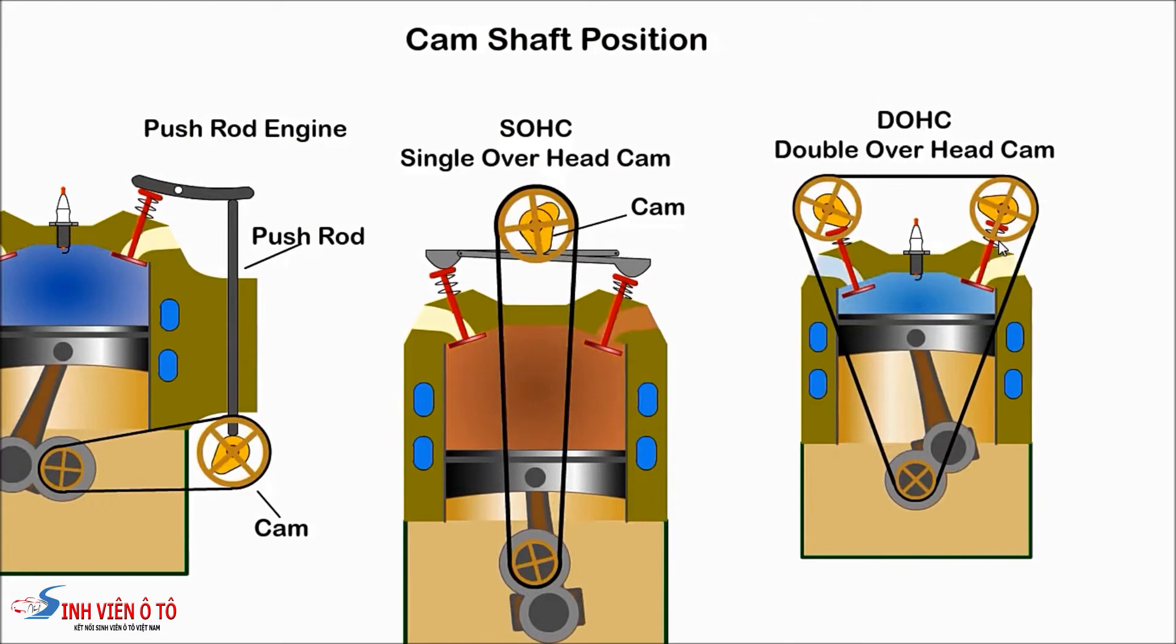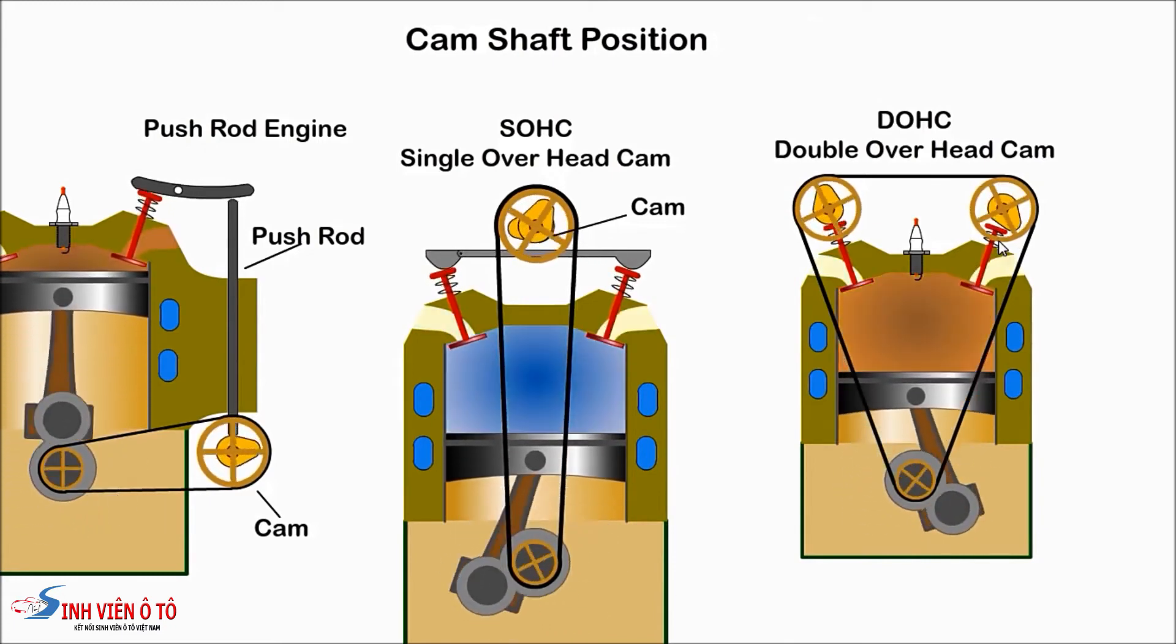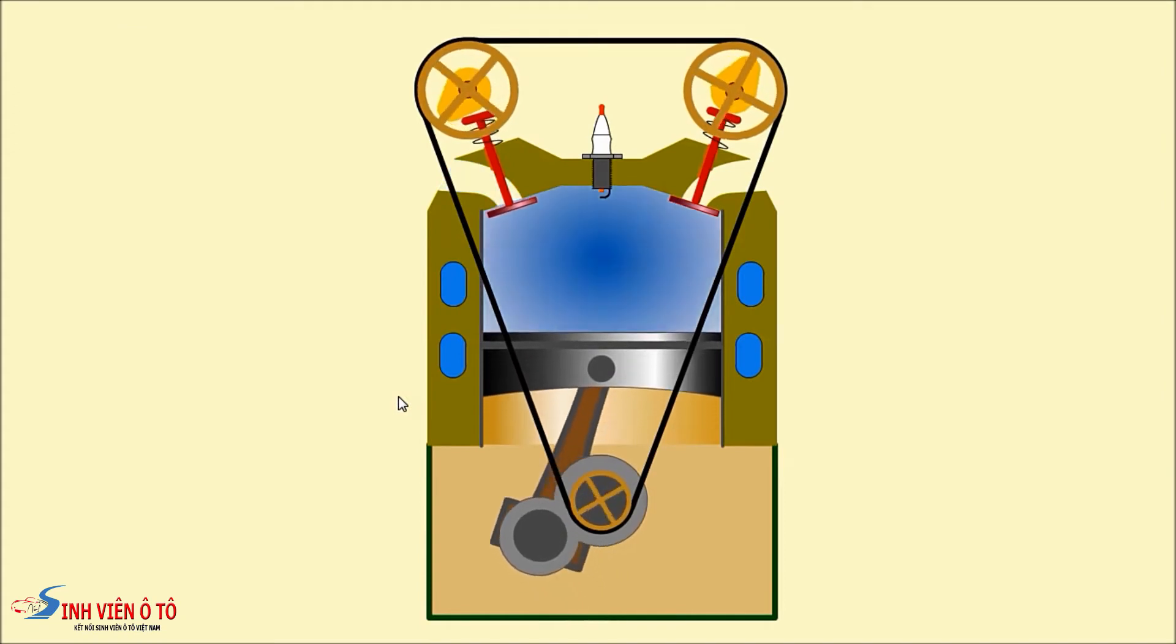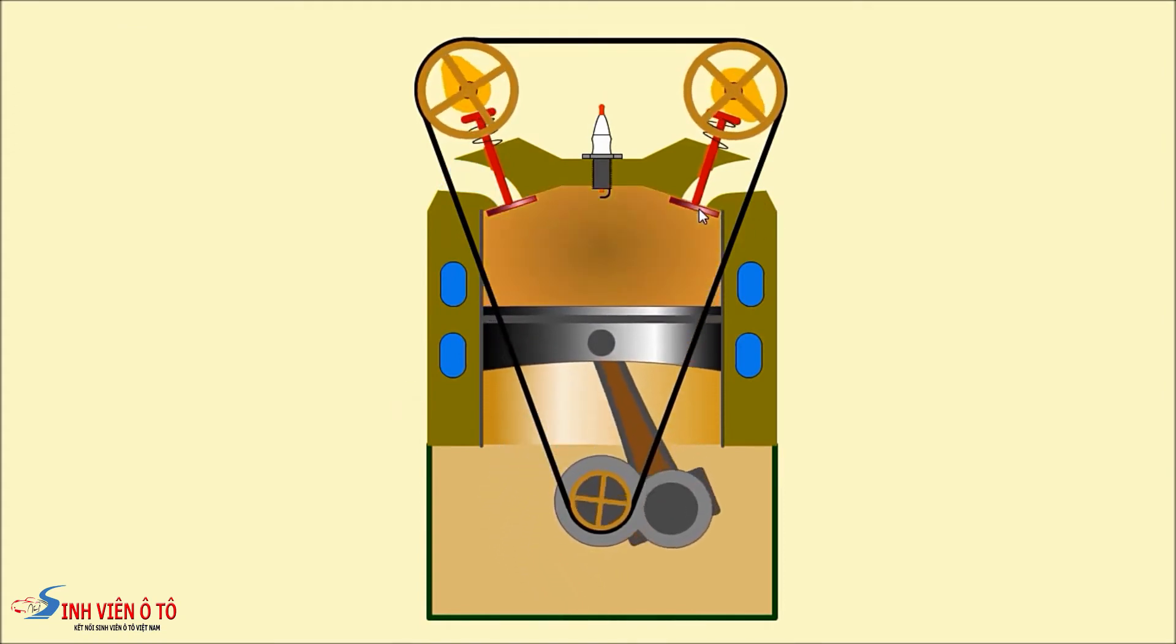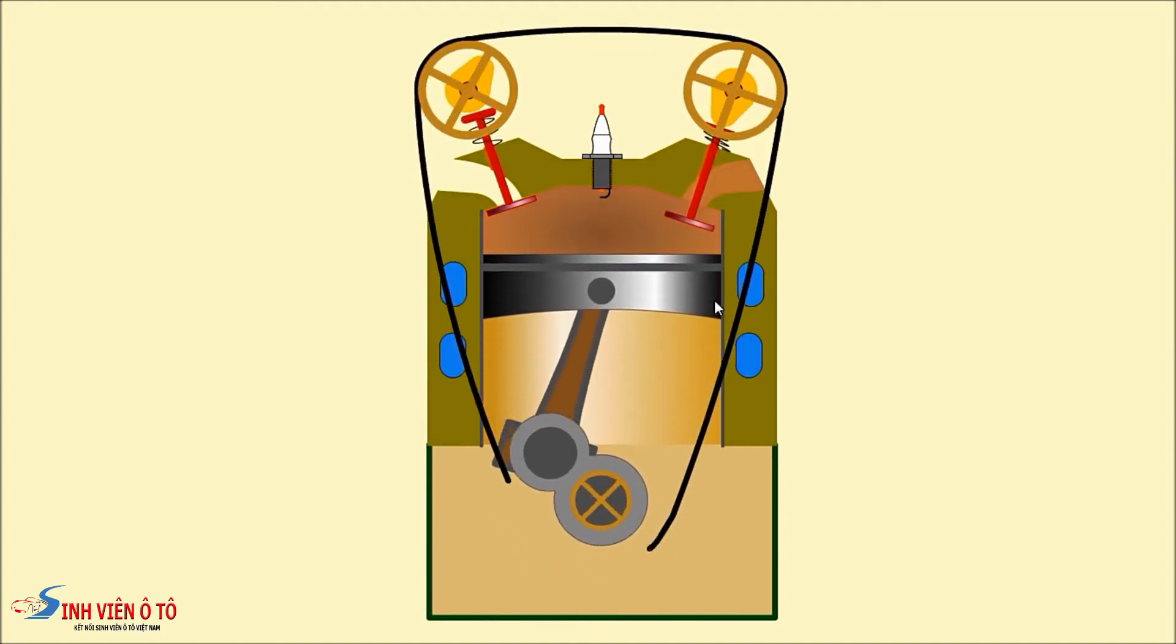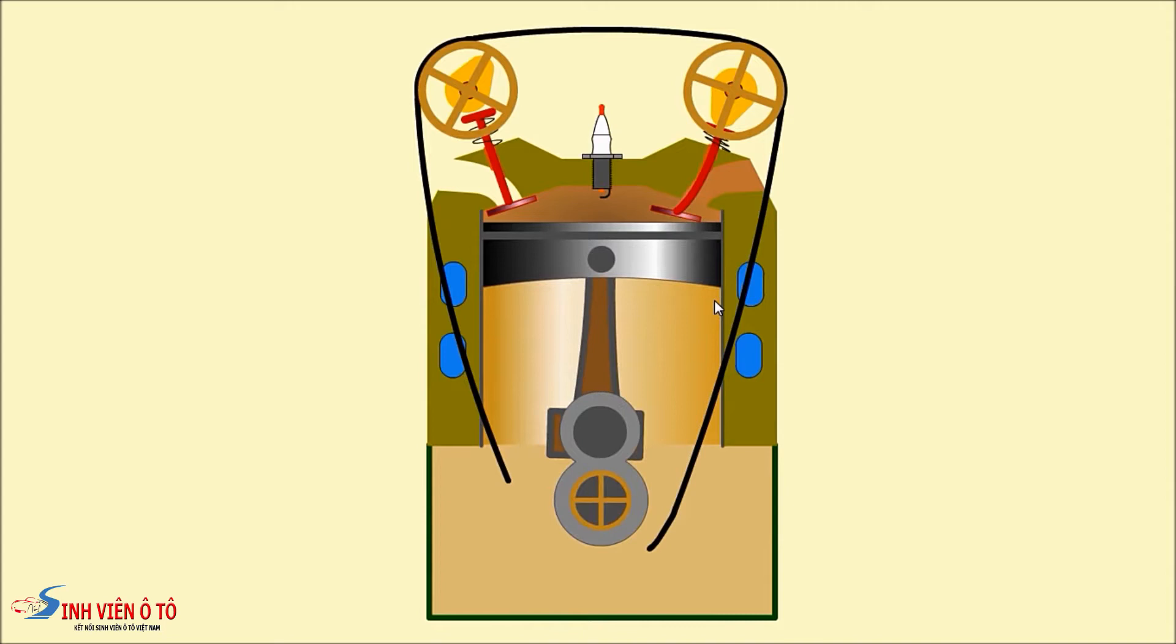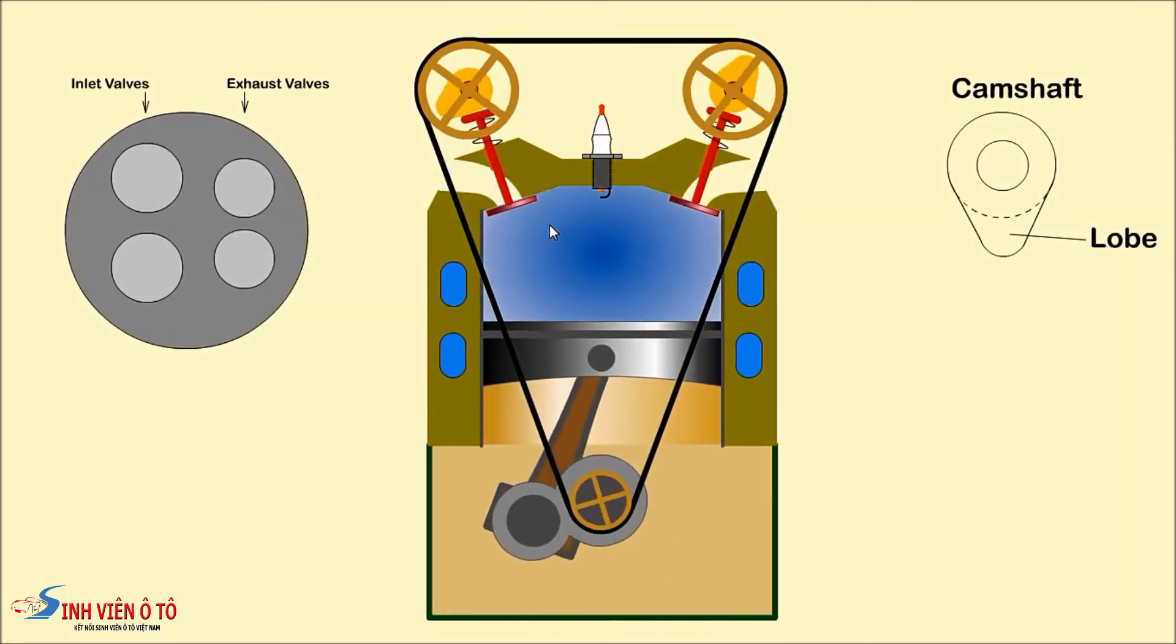With an interference engine, the valves extend into the path of the piston. If the timing belt breaks, it will result in damage to the valves.